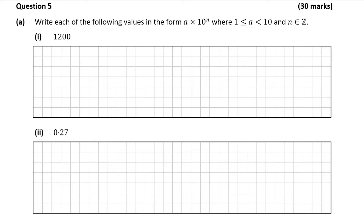The first thing I like to do with these questions is to write out the number with the decimal point if it hasn't got one already. If a number hasn't got a decimal point, you can just add .0 after the number — that hasn't changed the number at all, it just makes the question much easier. So I now have 1200.0, which is the exact same as 1200.